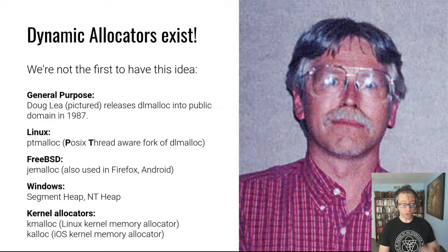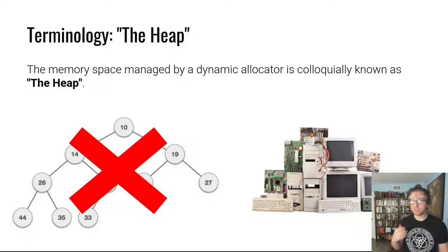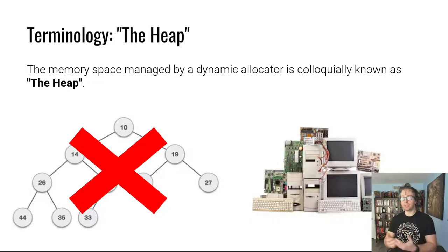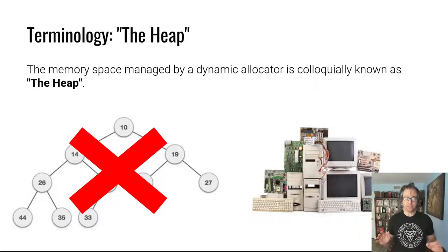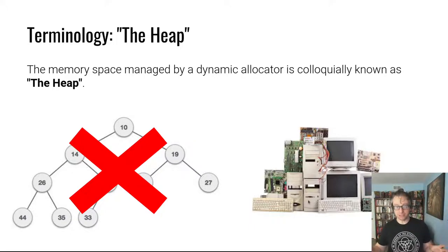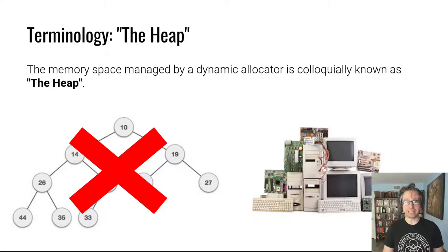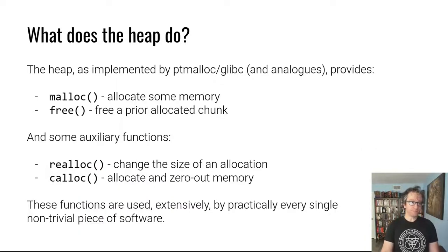I keep saying 'the heap' — where did this word come from? It's actually unclear. I tried to track down a historic usage. It is not called the heap because of the similarly named data structure in computer science — that's not what we're talking about. What we're talking about is more the usage in the sense of a heap of stuff, like a pile. The memory space managed by a dynamic allocator is colloquially known as the heap.